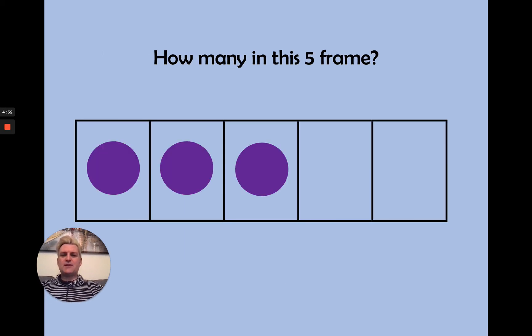Now, here we are. Let's have a look. How many in this five frame? Quick, quick, quick. There are three. How many in this one? There are five. How many in this one? There are two. There are two in this one. And you can subitize that really quickly, can't you?